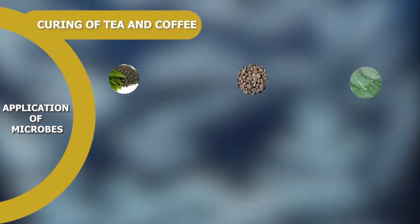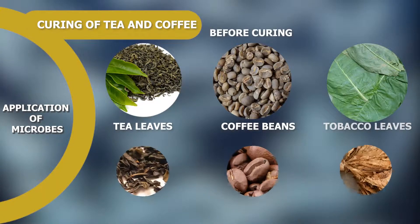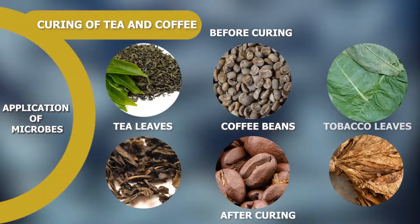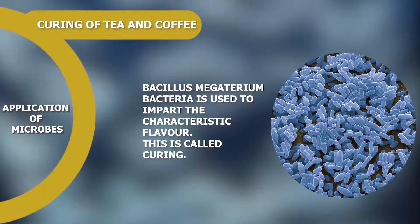Curing of Tea and Coffee: The leaves of tea, tobacco, the beans of coffee, and cocoa are fermented by Bacillus megatherium bacteria to impart the characteristic flavor. This process is called curing.